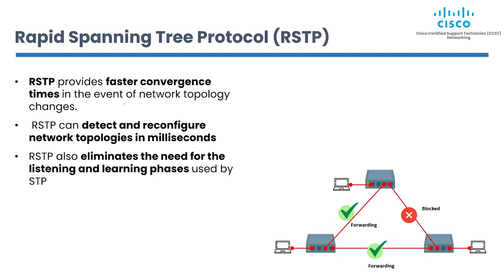RSTP provides faster convergence times in the event of a network topology change. RSTP can detect and reconfigure the network topology in milliseconds, improving network performance and stability. RSTP achieves faster convergence by using a different approach to topology configuration — it creates a backup path for each active path, so if a link fails, the network can switch to the backup path almost instantly. RSTP also eliminates the need for the listening and learning phases used by STP, further reducing convergence times.